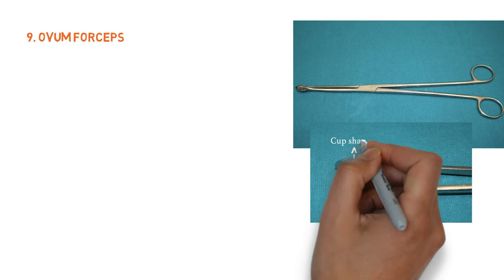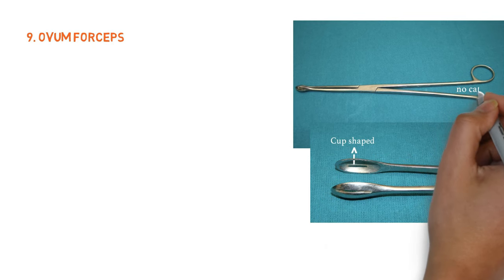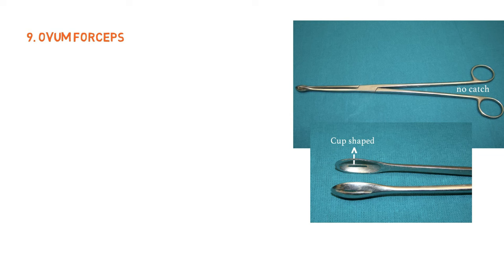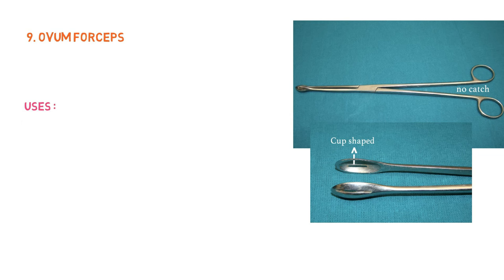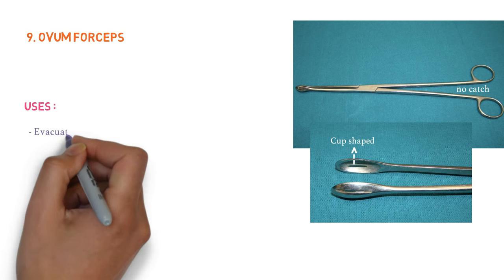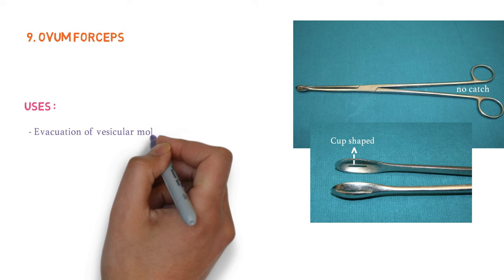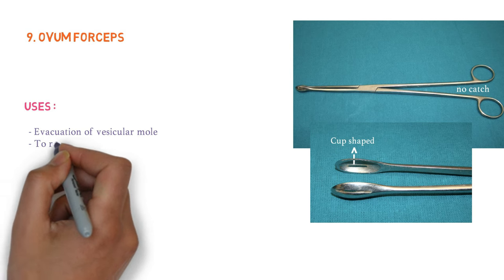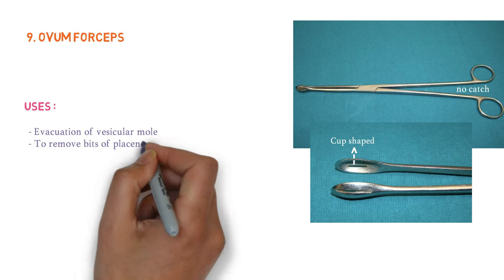Our last instrument in this lecture is ovum forceps. It has curve-shaped oval fenestrated ends, with proximal end having finger rings and no catch — the arms with cross joint. It is used for evacuation of vesicular mole, to remove beads of placenta, and to remove foreign bodies from the uterus.